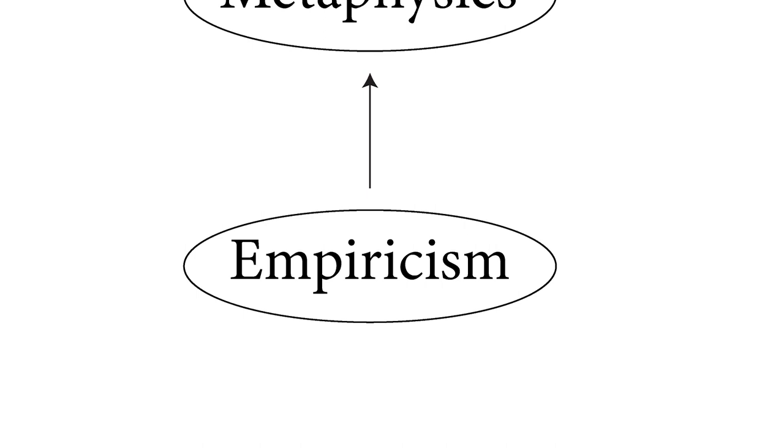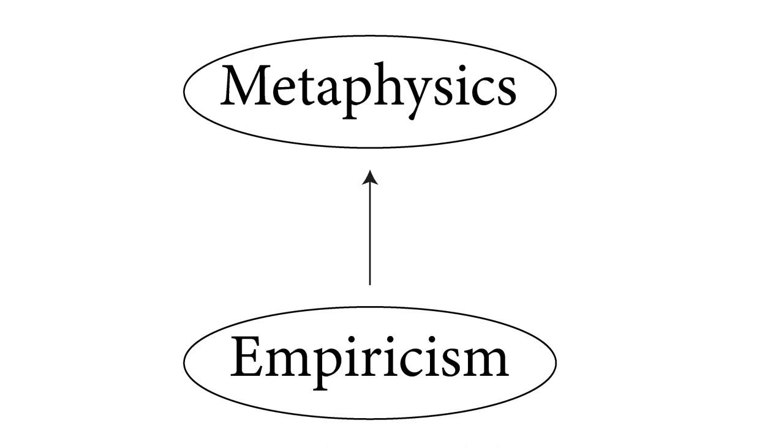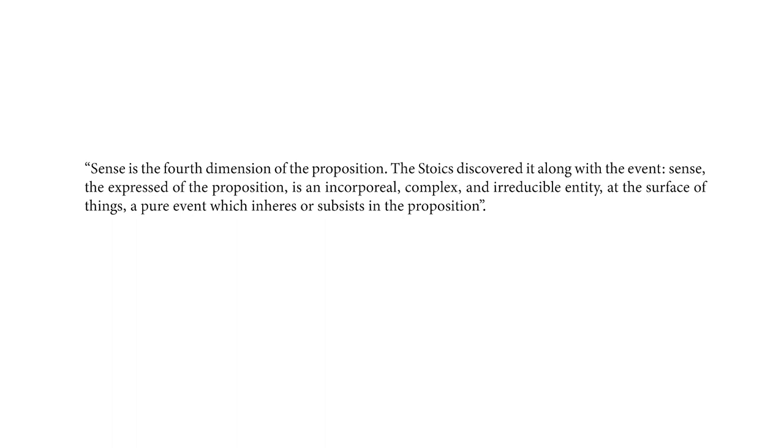Sense, therefore, is what this fourth dimension is called by Deleuze, who acknowledges its origin in ancient Greece. He says, sense is the fourth dimension of the proposition. The Stoics discovered it along with the event. Sense, the expressed of the proposition, is an incorporeal, complex, and irreducible entity at the surface of things, a pure event which inheres or subsists in the proposition.